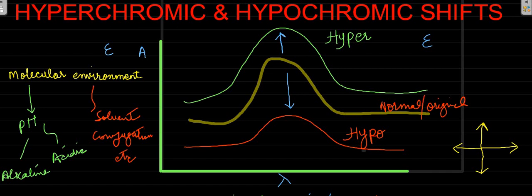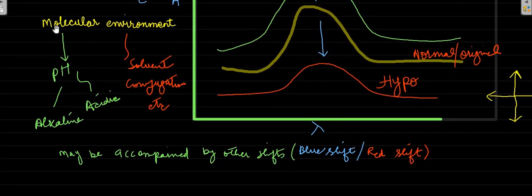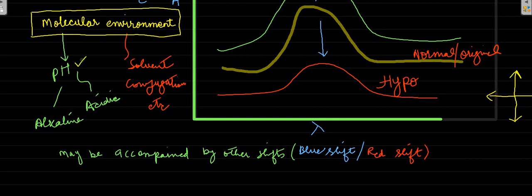This may be caused by many parameters, and principally we can say that change in the molecular environment will result in a change in its epsilon value. That molecular environment may be a change in pH like alkaline or acid, solvent could be another parameter, conjugation can also play a part.